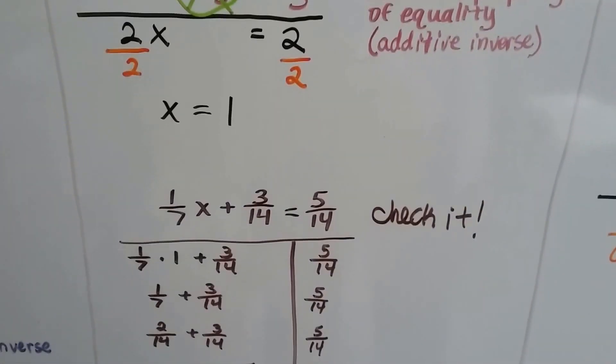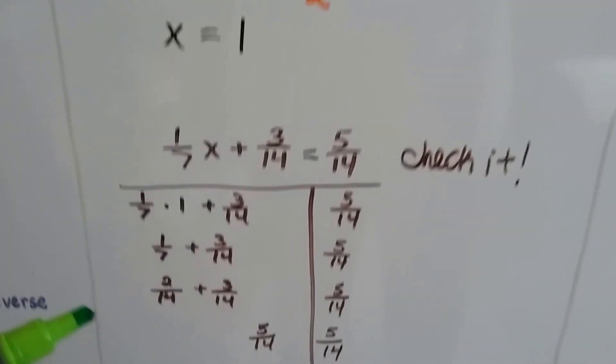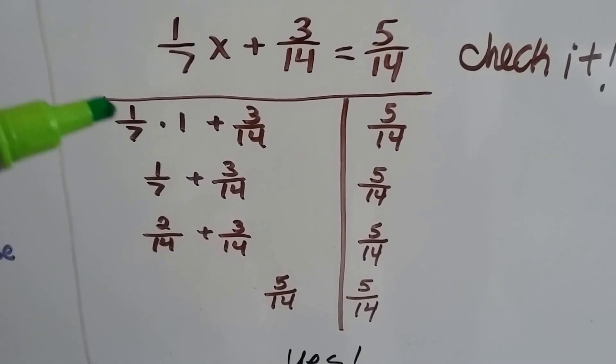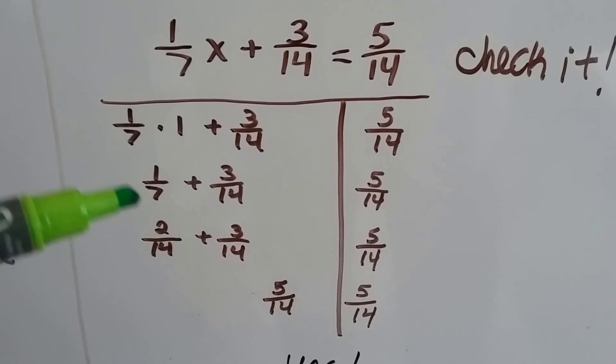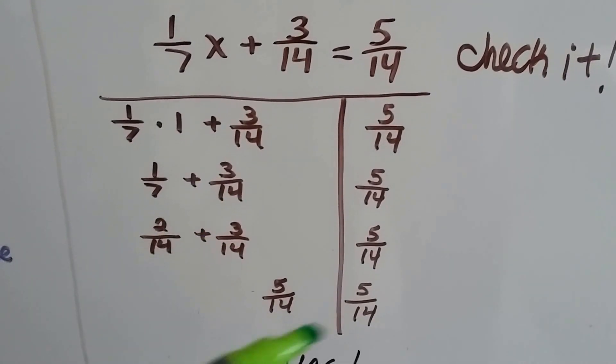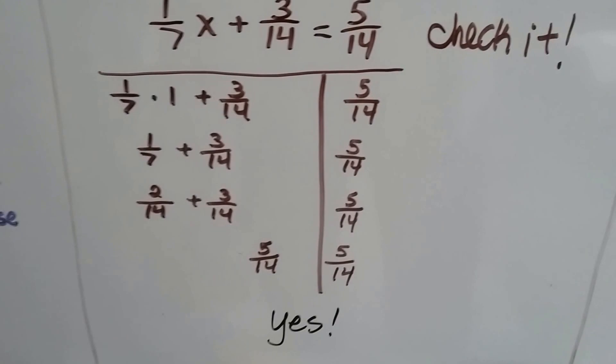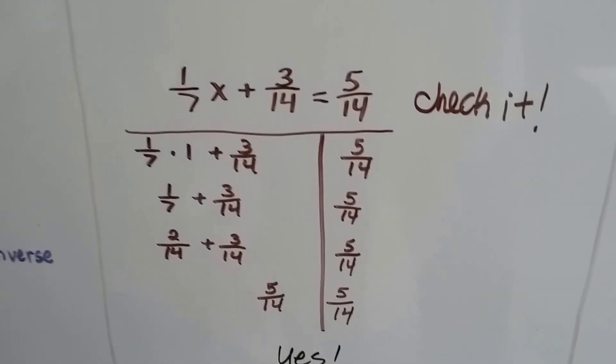We can check it by plugging in 1, and we can see it works because that makes 1/7, and if we make them have common denominators, it's going to be 2/14, which is 5/14. So it works.